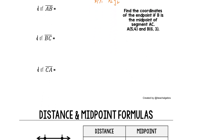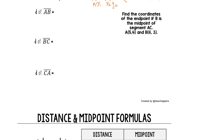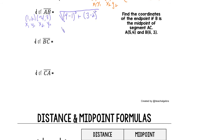Now we're going to use those same points but use the distance formula instead. The distance of line segment AB: our points are (1, 2) and (-4, 3), labeled X1, Y1, X2, Y2. The distance is the square root of X2 minus X1 squared plus Y2 minus Y1 squared. So that's the square root of (negative four minus one) squared plus (three minus two) squared — the square root of negative five squared plus one squared — which is the square root of 25 plus 1, or the square root of 26.